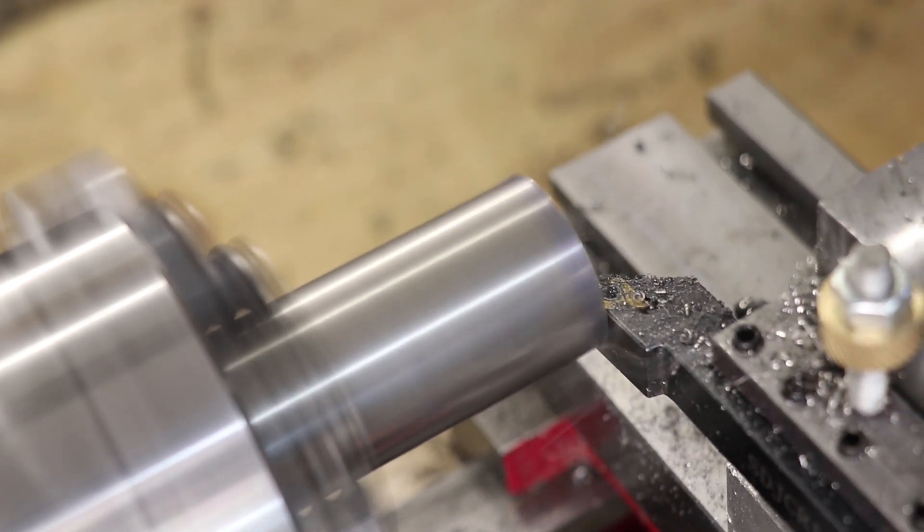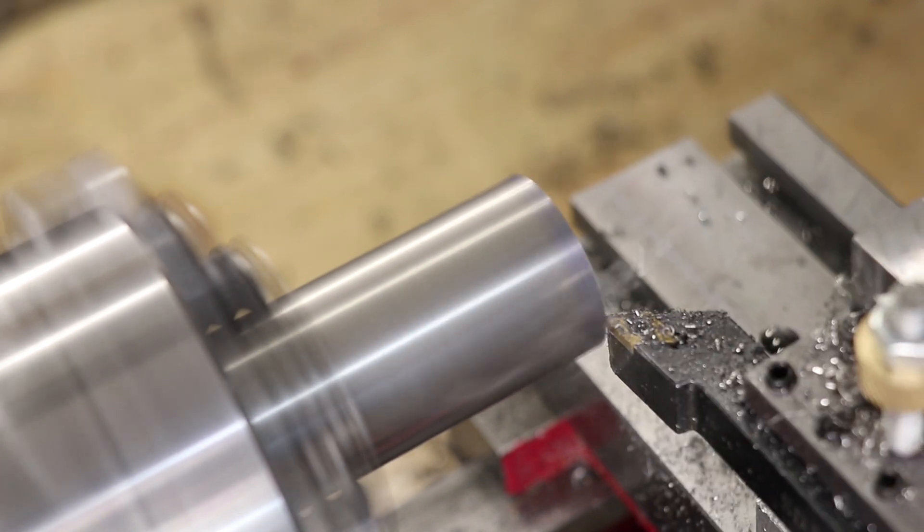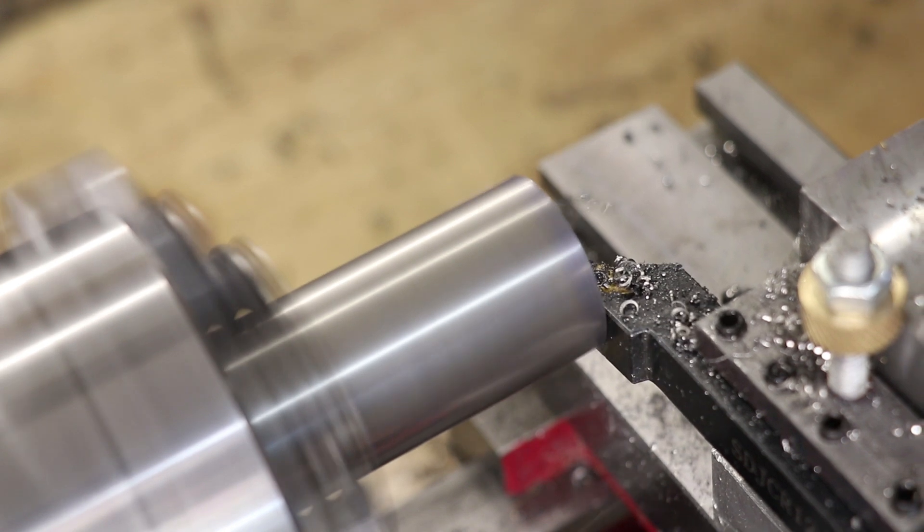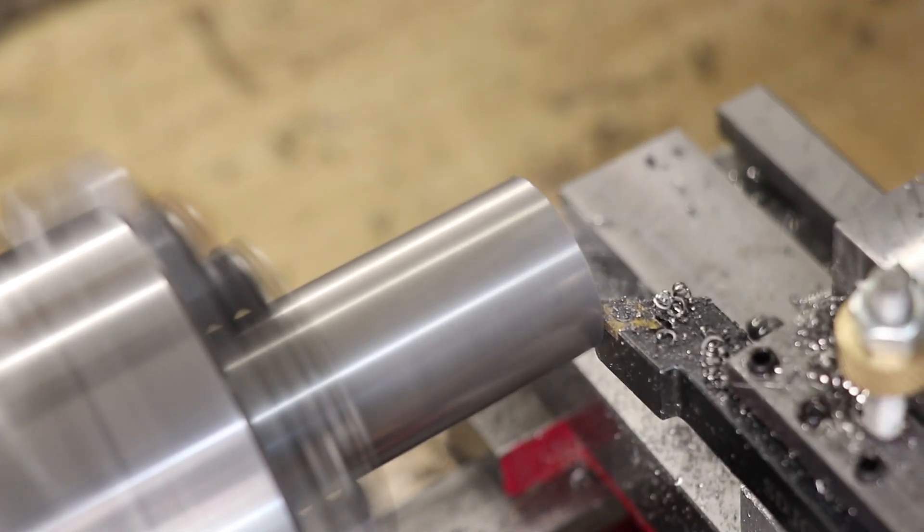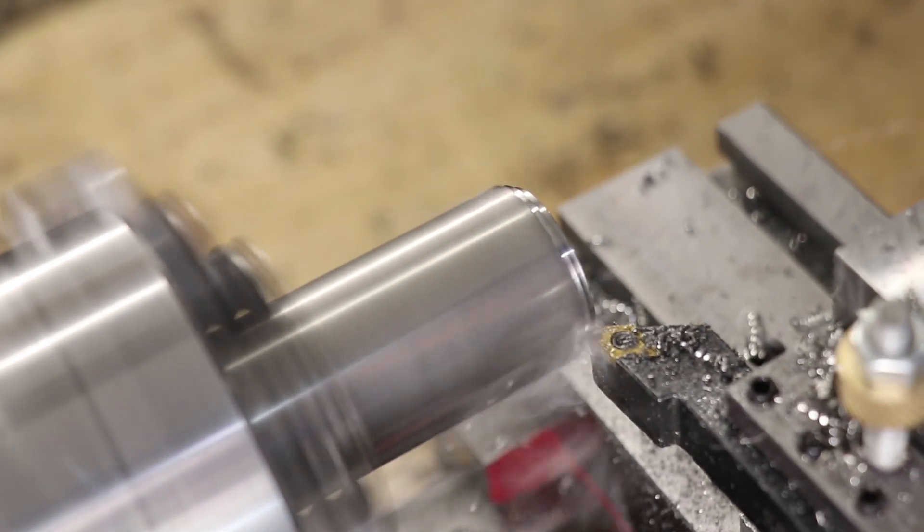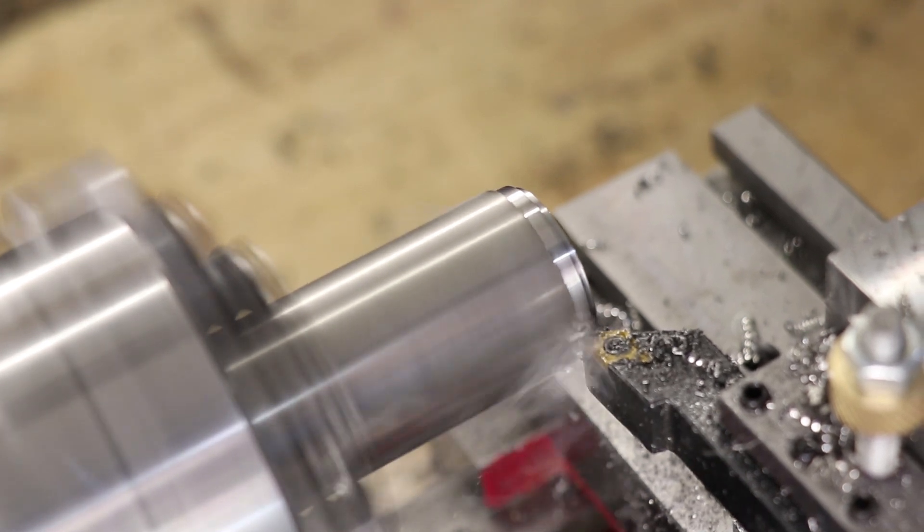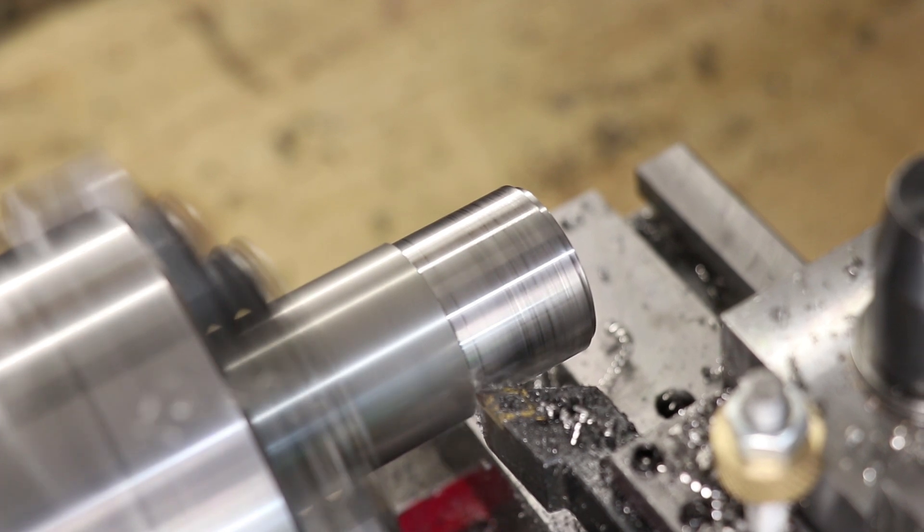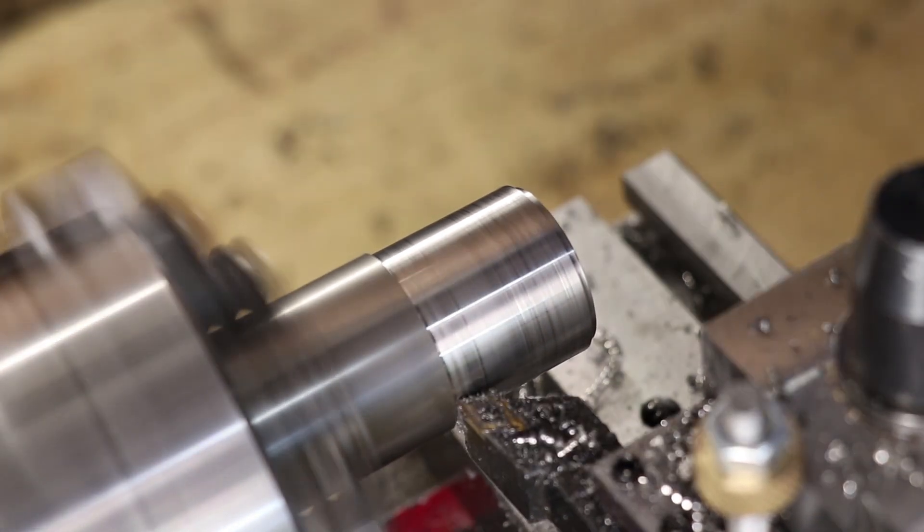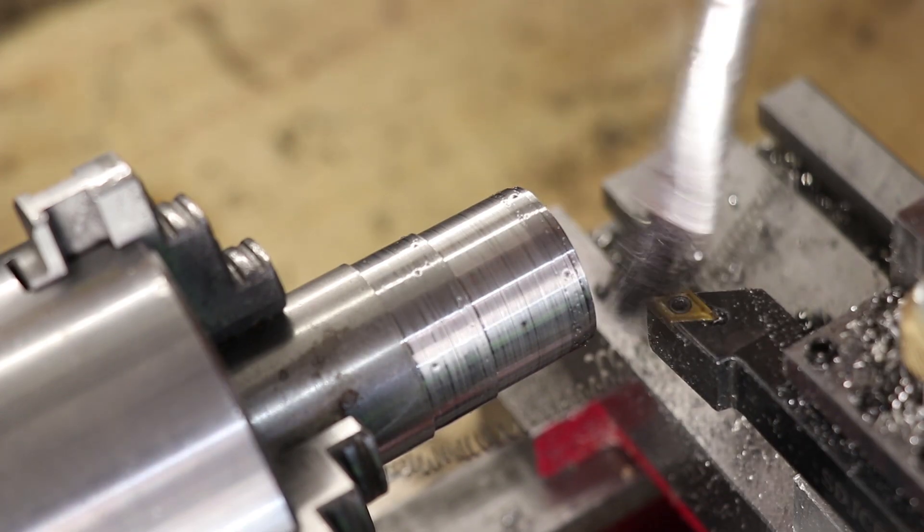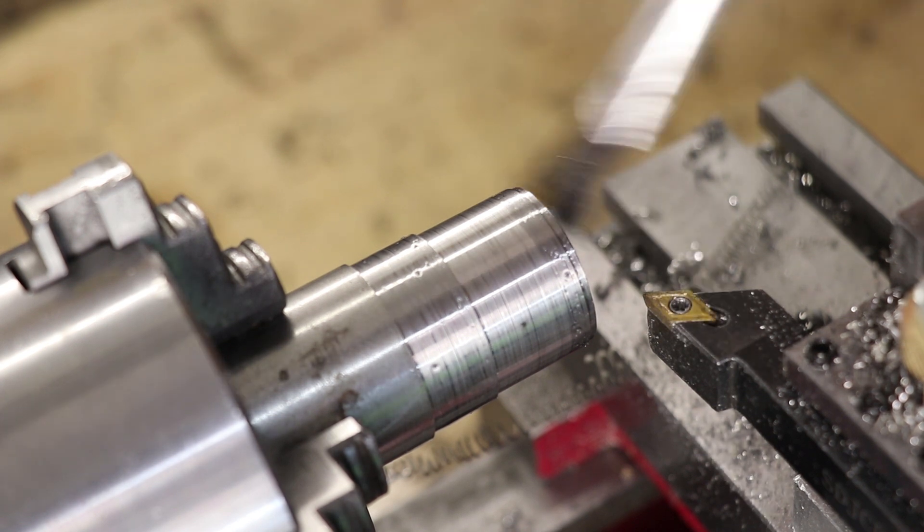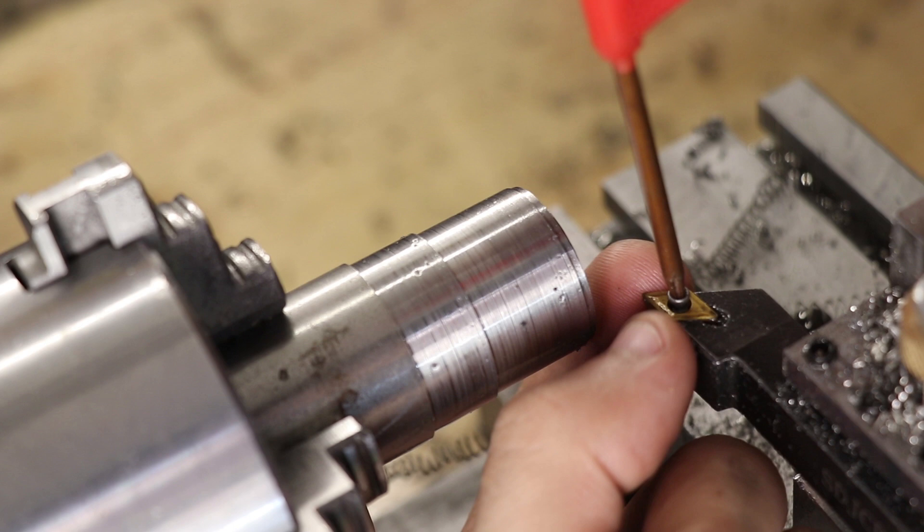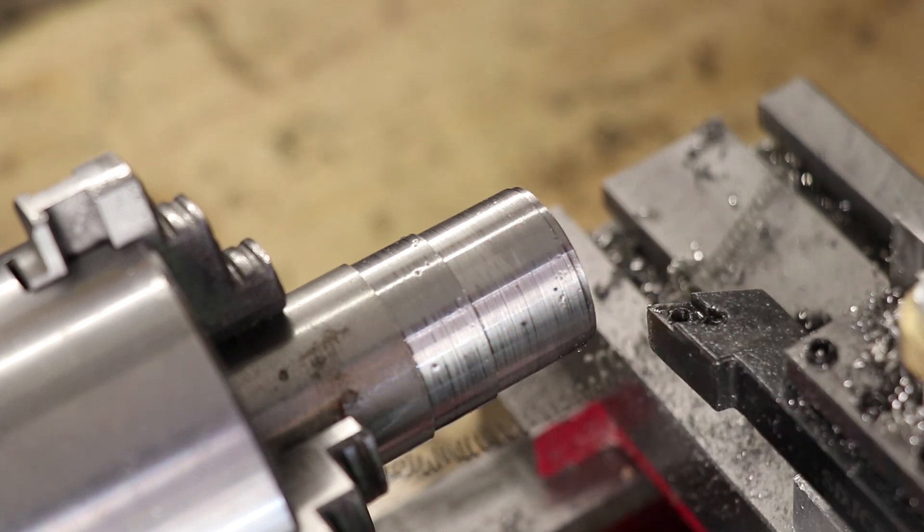I'll face the end and I'll start turning the outside. Now I could really tell that the lathe was struggling with this material and as it turned out it was the carbide insert. The insert was pretty old and worn down so I swapped it out for a new one.